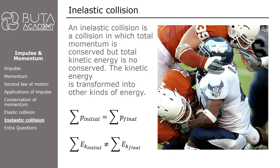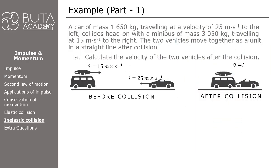A car of mass 1650 kg, traveling at a velocity of 25 meters per second to the right, collides head-on with a minibus. The two vehicles move together as a unit in a straight line after the collision. First part of the question: calculate the velocity of the two vehicles after the collision.